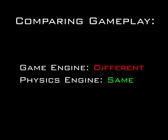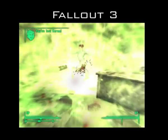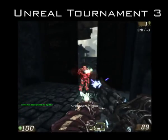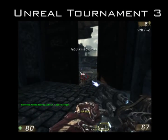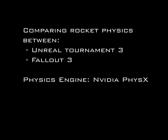We will now compare different games that have the same physics engines. We will start with comparing death physics between Unreal Tournament 3 and Fallout 3, both of which use the NVIDIA PhysX engine. Now we will compare rocket physics between the same games, again using NVIDIA PhysX.